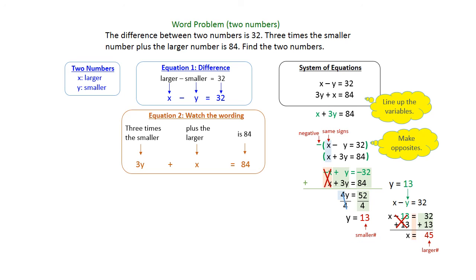So we found two different numbers with a difference of 32 and 3 times the smaller plus the larger is 84.